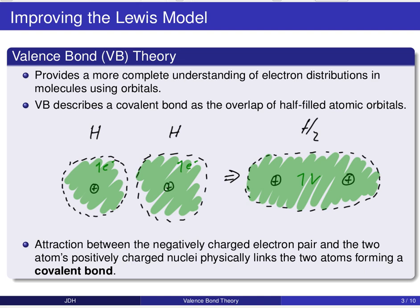And so this is where the valence bond model comes in. We're basically improving upon the Lewis model. And so the valence bond model provides a more complete understanding of the electron distributions in molecules by using orbitals. And very specifically, the valence bond theory describes a covalent bond, a sharing of electrons, as essentially an overlap of orbitals, or more specifically, an overlap of half-filled orbitals.